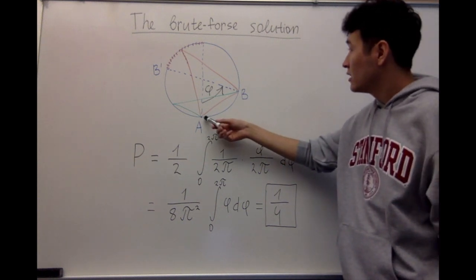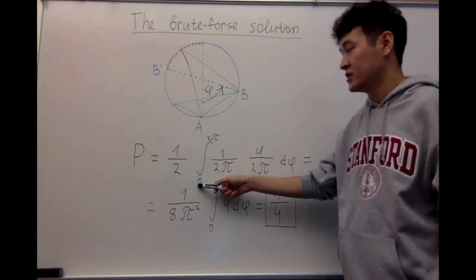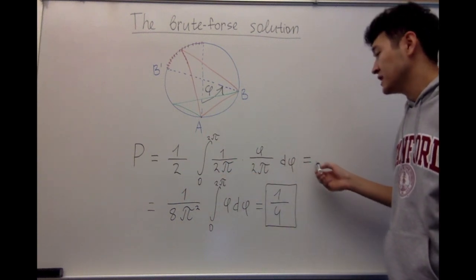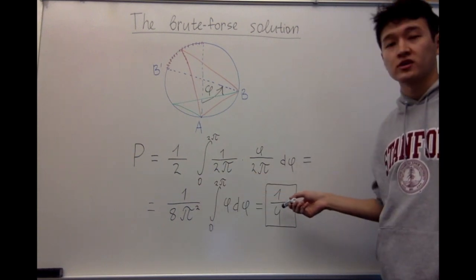Then we integrate over the entire circle from 0 to 2π. By easy calculus, we obtain that the answer is 1/4.